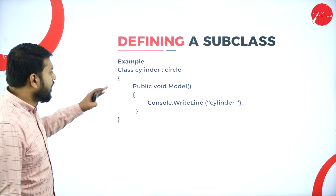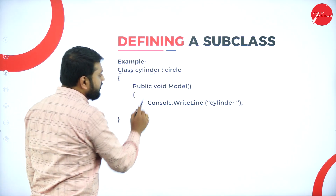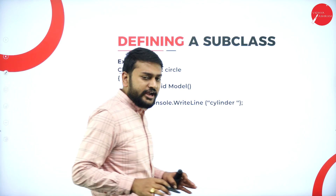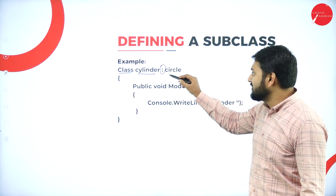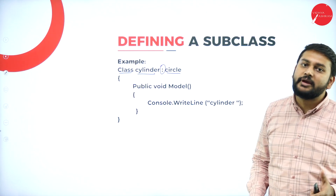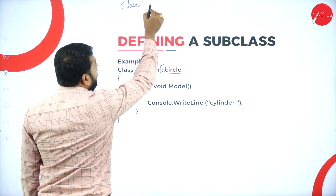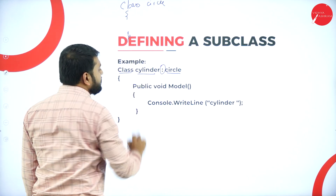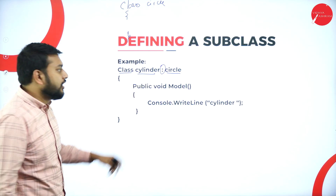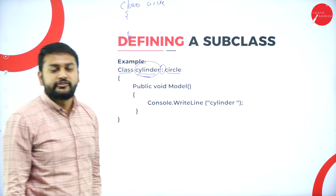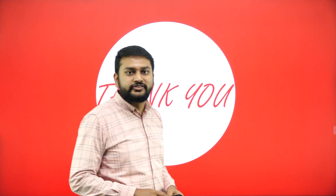For example, the keyword class is used, the subclass name here is Cylinder, and after the colon we have Circle as the base class. Circle is already defined as a separate class. Whatever properties are in the Circle class are being inherited into the Cylinder class. This is how you define a subclass in C#.